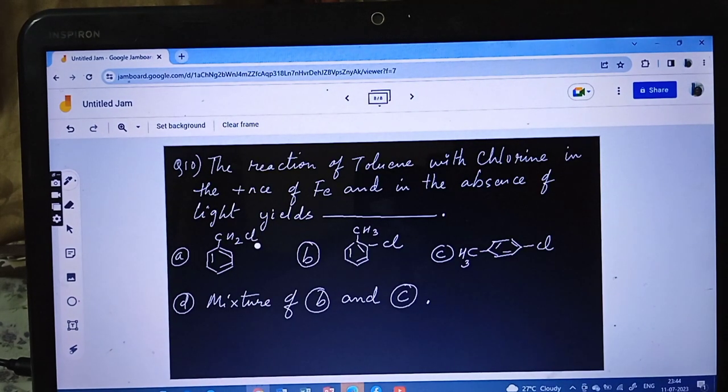Now last question, question number 10. The reaction of toluene with chlorine in presence of iron and in the absence of - pay attention - in the absence of light or sunlight yields? Because there is absence of sunlight, substitution won't happen here, or photolysis won't happen, free radical mechanism won't happen. So option A is wrong. And we know this Cl and CH3, their directive influence is ortho-para directing.